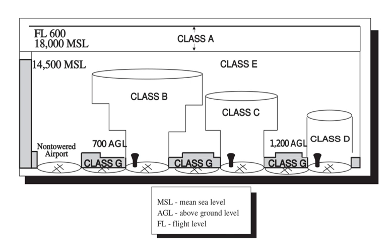The United States airspace systems classification scheme is intended to maximize pilot flexibility within acceptable levels of risk appropriate to the type of operation and traffic density within that class of airspace, in particular to provide separation and active control in areas of dense or high-speed flight operations. The Albert Roper Implementation of ICAO airspace classes defines classes A through G, with the exception of class F, which is not used in the United States.